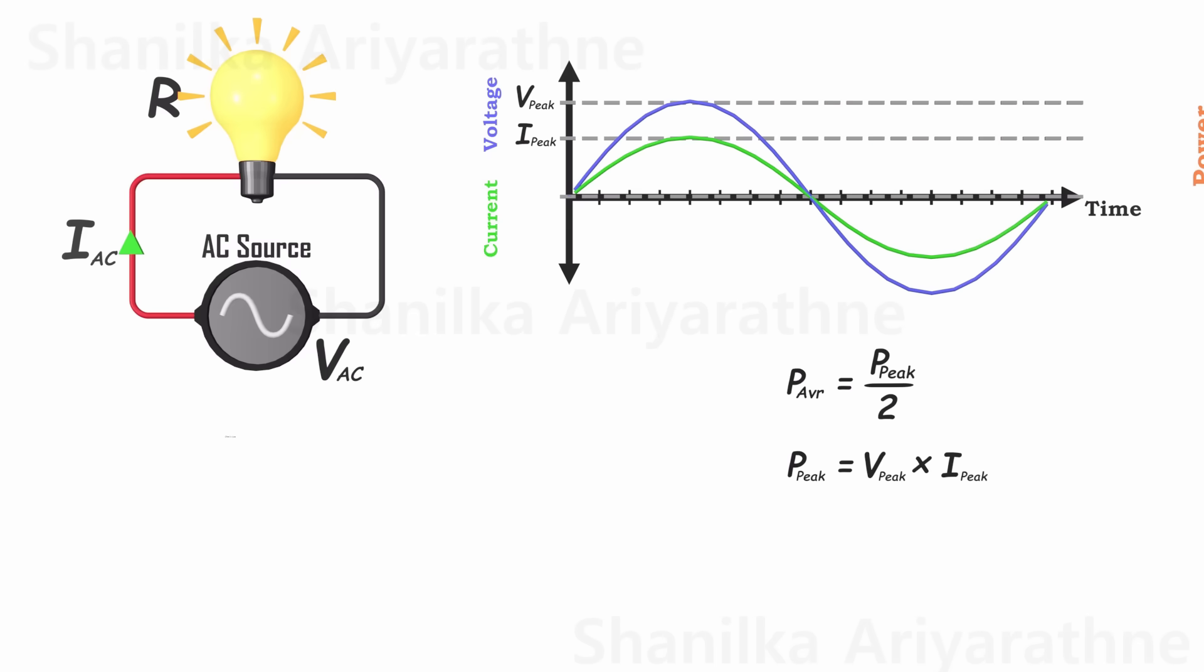Returning to the circuit, we understand, according to Ohm's law, that despite the varying voltage and current, the ratio between voltage and current is consistently equal to the resistance of the light bulb. Let's rearrange the formula to express current as the subject.